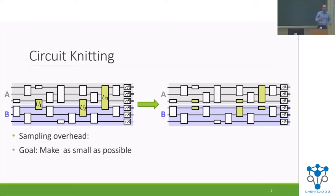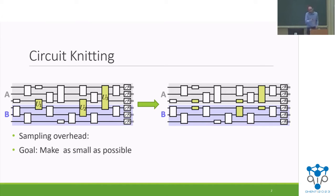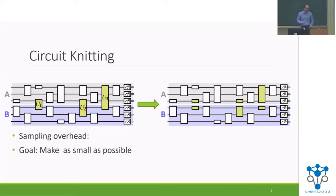Imagine you're an experimentalist and you have a large quantum circuit you'd like to run on your quantum computer, but your quantum circuit is too large. Maybe your quantum circuit has 200 qubits, but your quantum computer only has 100 qubits. So the idea of circuit knitting techniques is that you want to split up your circuit into smaller subparts, into smaller subcircuits that individually fit on your quantum computer. Then you run these smaller subcircuits and somehow you want to reconstruct the outcome of the original circuit only from the outcomes of these smaller subcircuits.